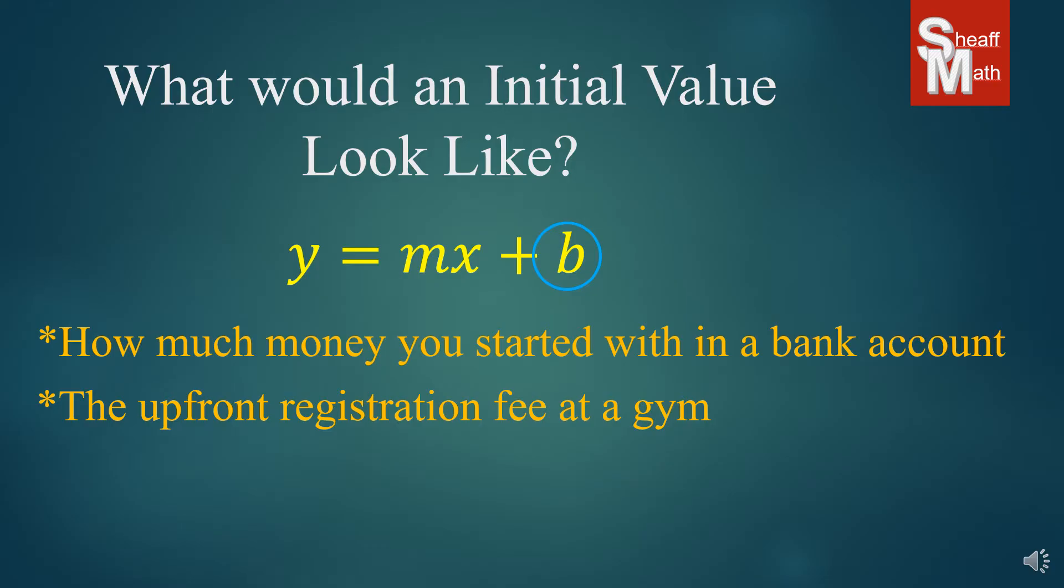And then the upfront registration fee at a gym. I don't know why we have so many gym problems, but the upfront fee is like, let's say you were going to go join a gym and they charged you a signup fee of $25. And then each month after that, you had to pay 50. Well, the $25 you have to pay no matter what. It's a one-time cost. And that would be your initial cost for this one or how much a car costs before it depreciates or before it loses its value. So when you buy a new car, you buy it, let's say for $20,000 and then each year it goes down.